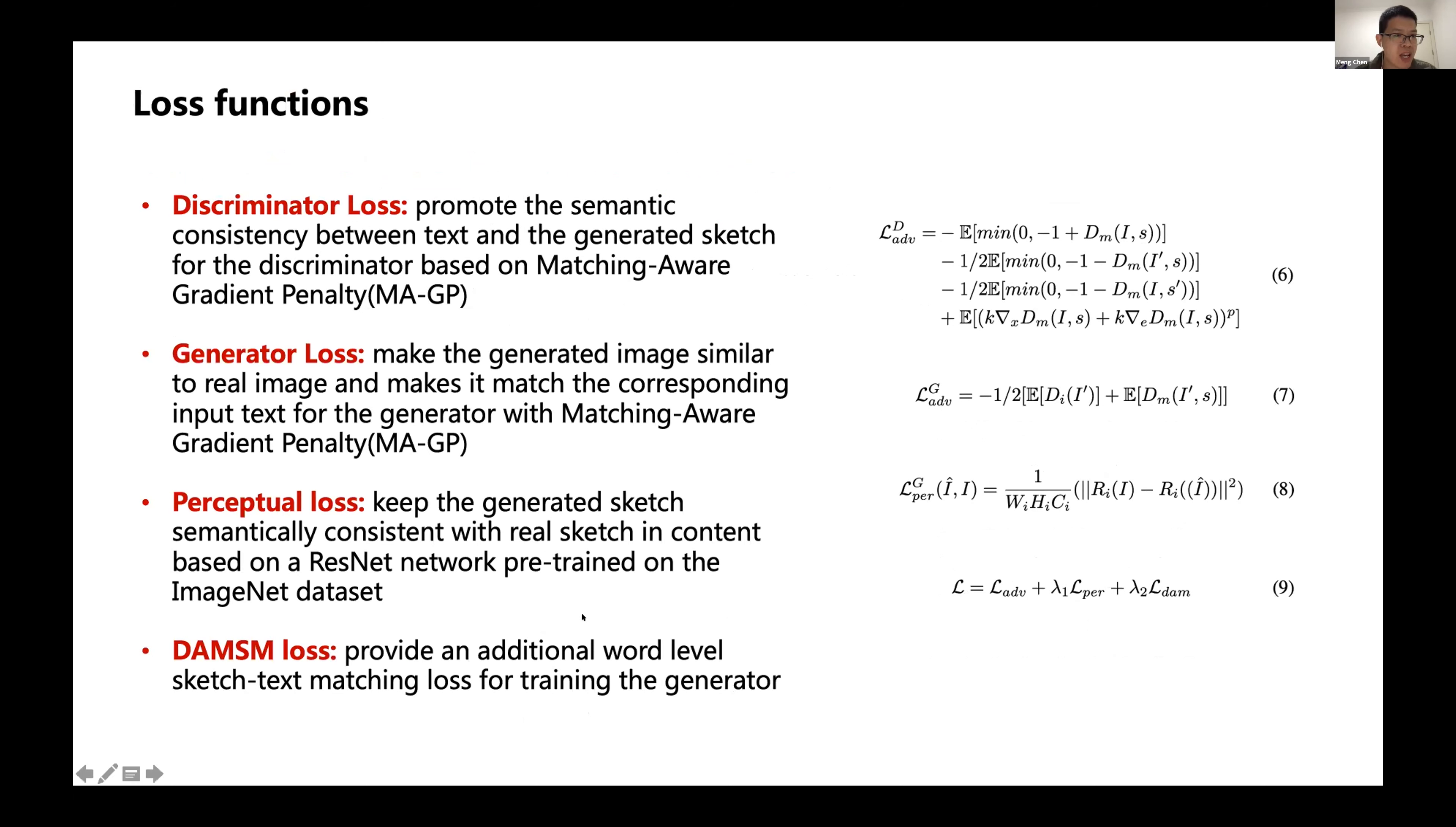Here are our loss functions. Basically, first we designed the adversarial loss which is applied in the discriminator and generator. The adversarial loss is the matching-aware gradient penalty loss. Then we designed two extra losses. One is a perceptual loss which can keep the generated sketch semantically consistent with the real sketch content based on a ResNet network pre-trained on the ImageNet dataset. We also designed a DAMSM loss which can provide an additional word-level sketch-text matching loss for training the generator.